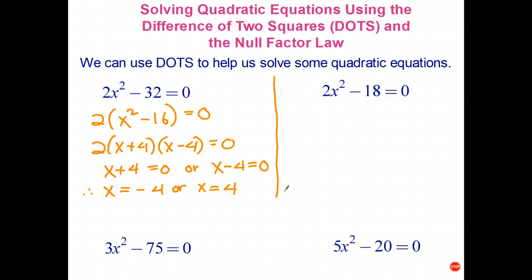Okay, let's have a look at this one over here. 2x squared take 18 equals 0. Well, in fact, I'll leave that one for you to do.